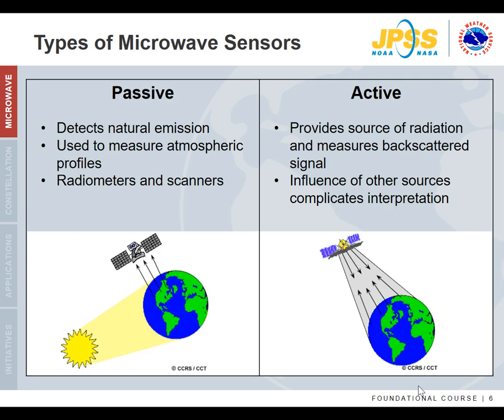Microwave sensors can be further divided into passive and active sensors. The microwave energy detected by a passive sensor is a combination of radiation emitted by the atmosphere, that naturally emitted from the Earth's surface, and transmitted radiation. The amount of naturally emitted microwave radiation is generally quite small, so active sensors provide their own source of radiation and the backscattered signal is measured. In this module, the focus is on passive sensors.